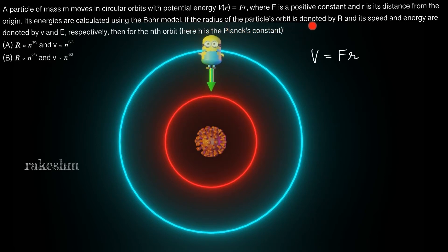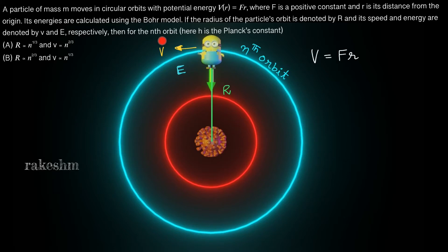If the radius of the particle's orbit is denoted by R and its speed and energy by v and E, then for the nth orbit, four options are given out of which one or more could be correct. We will take each option and give it a true or false. The first two options are: option A — radius is proportional to n^(1/3) and speed is proportional to n^(2/3); option B — radius is proportional to n^(2/3) and speed is proportional to n^(1/3).